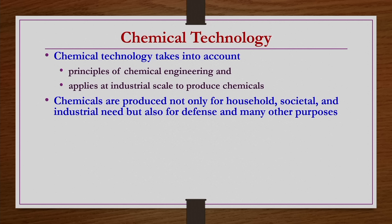Also, it is essential for them to follow pollution concerns before discharging the wastage of the chemical industries. The wastage may be in gaseous form, liquid form, or solid form. They have to follow the pollution norms strictly before discharging them into the atmosphere.